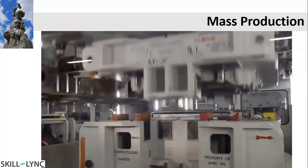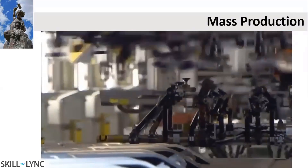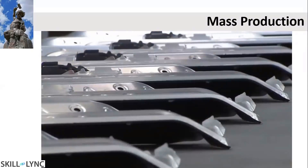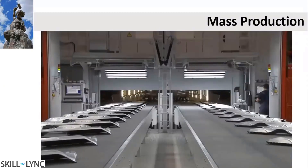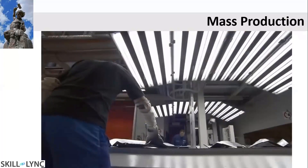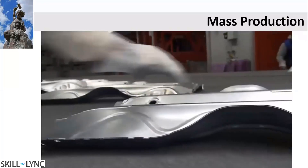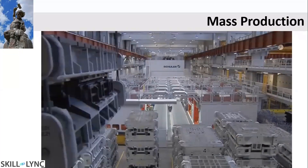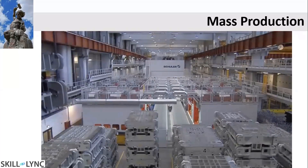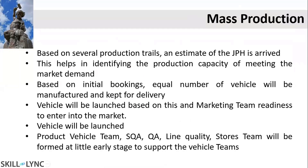The press weight you are seeing would be approximately two tons or something like that. These are the components of BIW, and all these things are put together using spot welding. You can see a lot of components coming out in mass production like this.